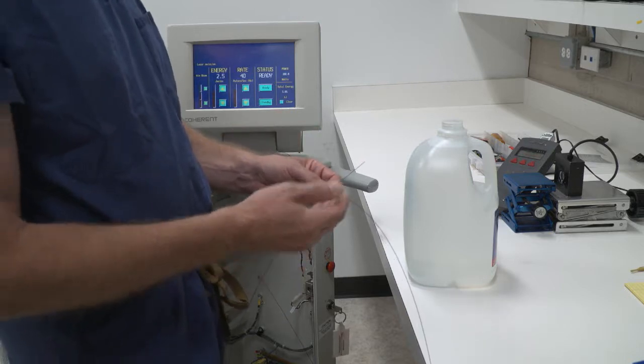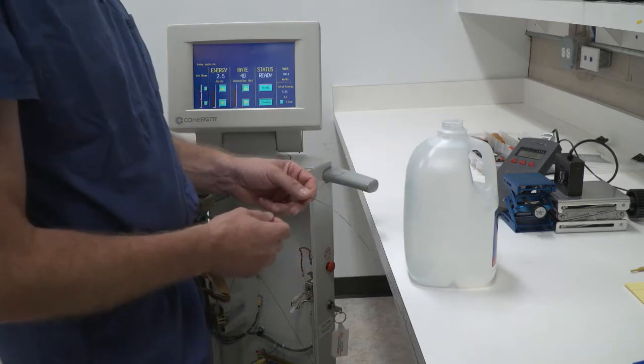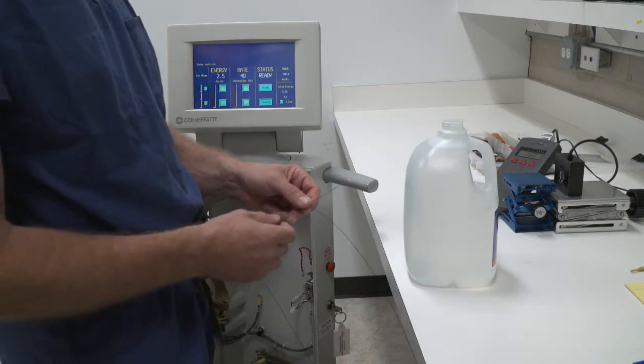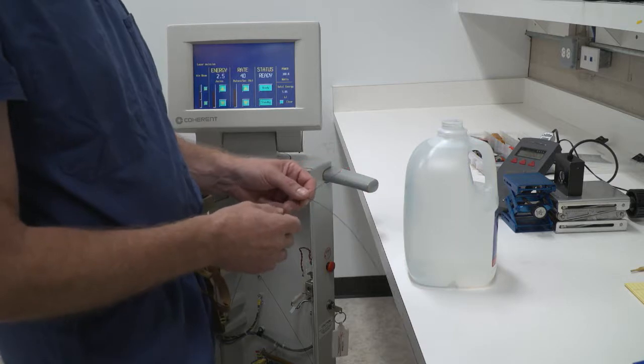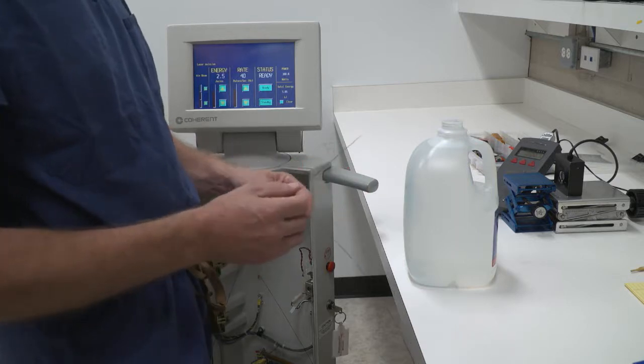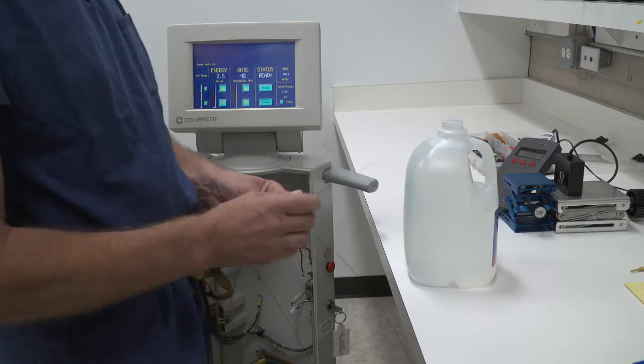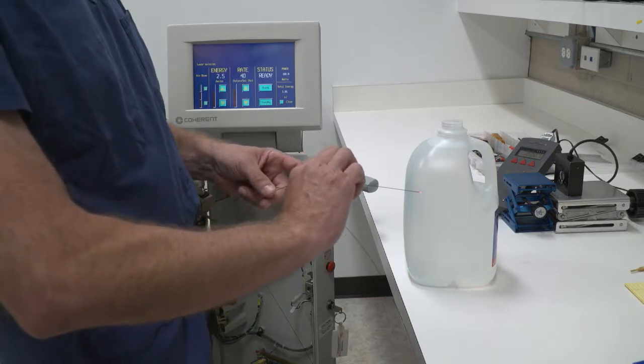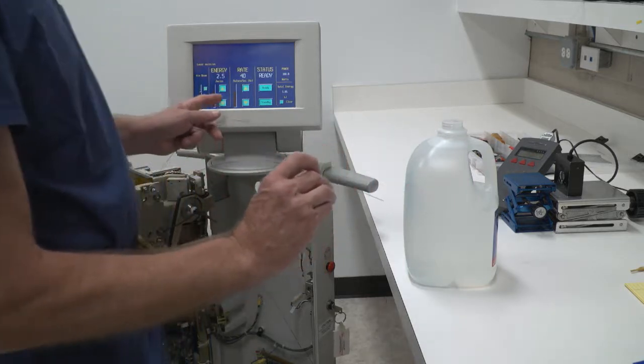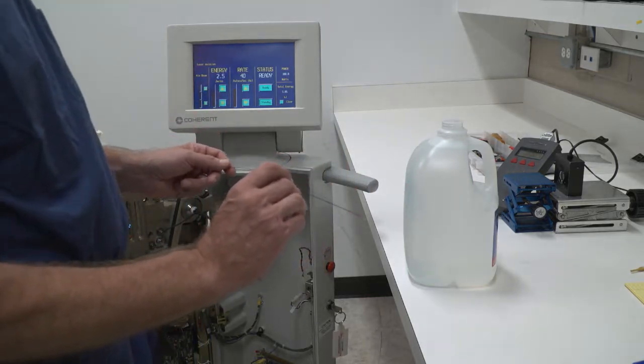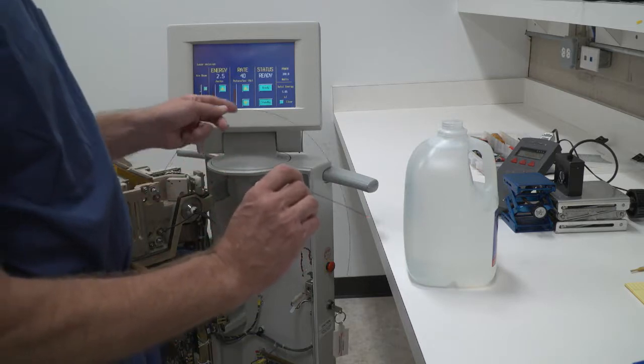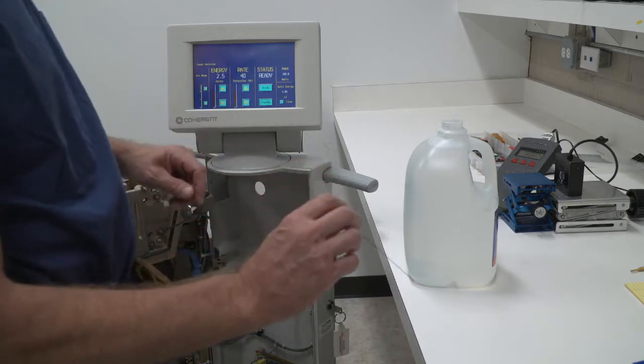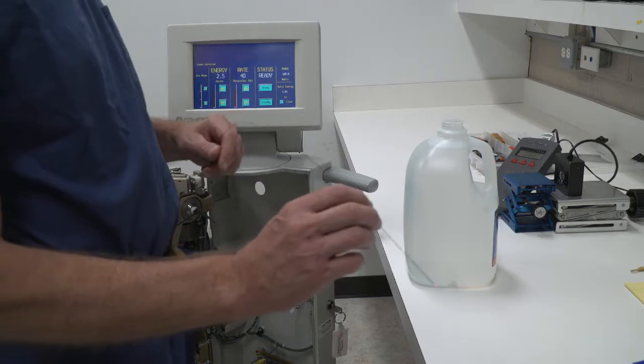I'm going to take my fiber and insert it into a gallon of deionized water. The deionized water will act as a coolant, keeping the tip of the fiber cooled down, and prevent damage to my fiber. So I'm going to select 2.5 joules per pulse at a rate of 40 pulses per second, equaling 100 watts of output power.